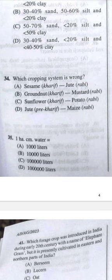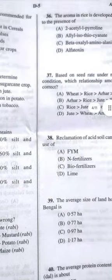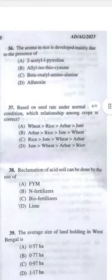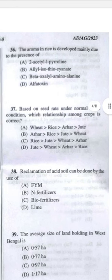Question 36: Aroma in rice is developed mainly due to the presence of — A, 2-acetyl-1-pyrroline.